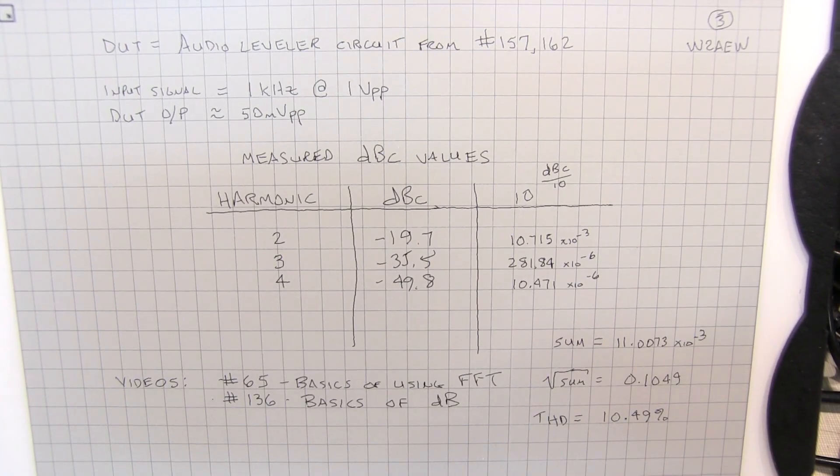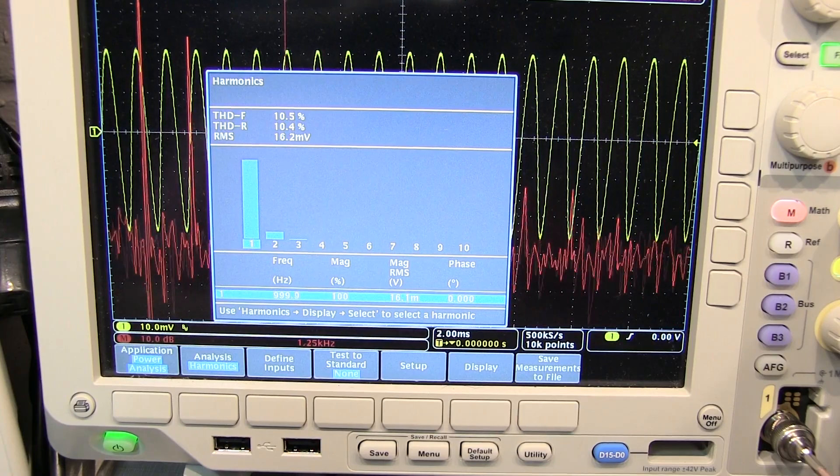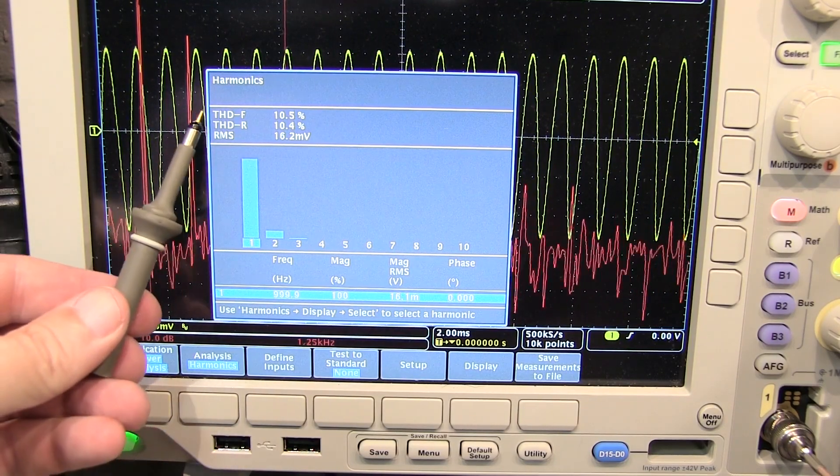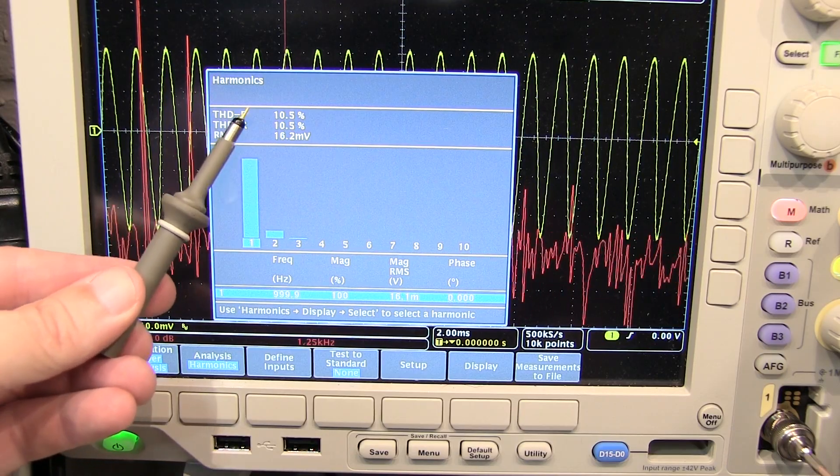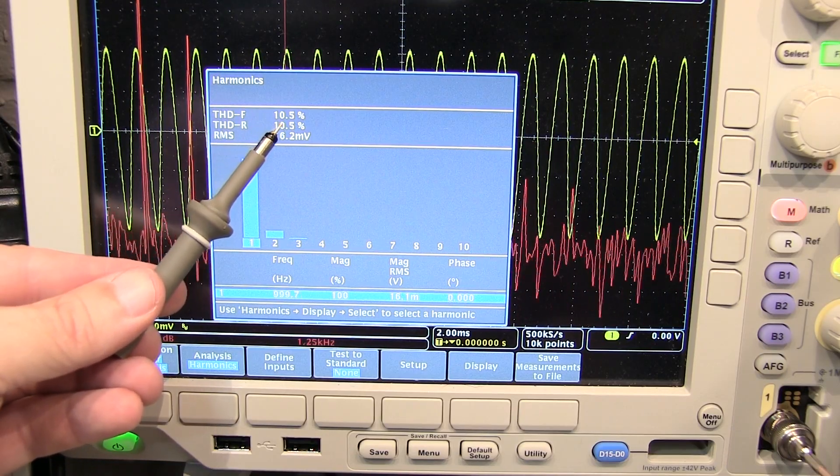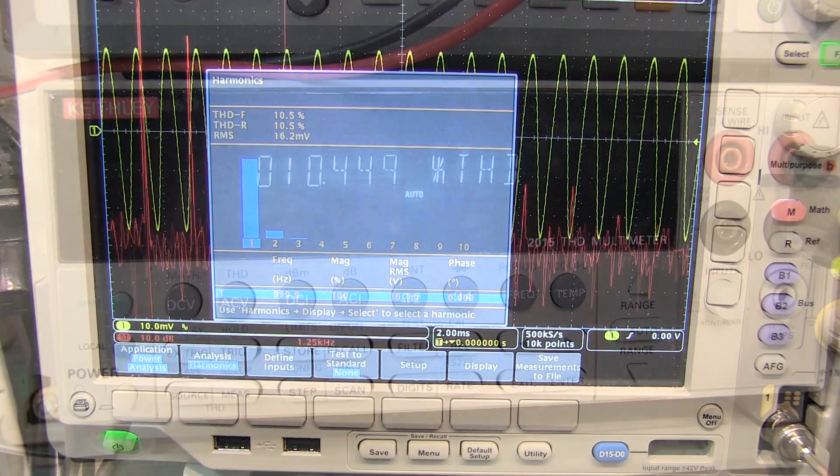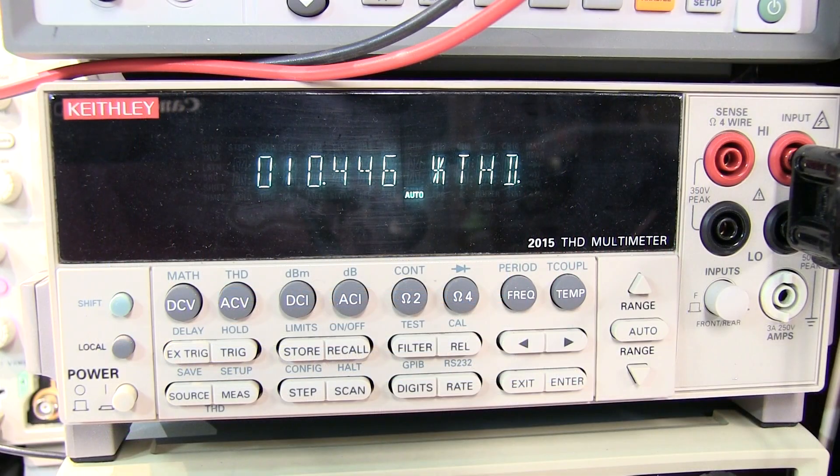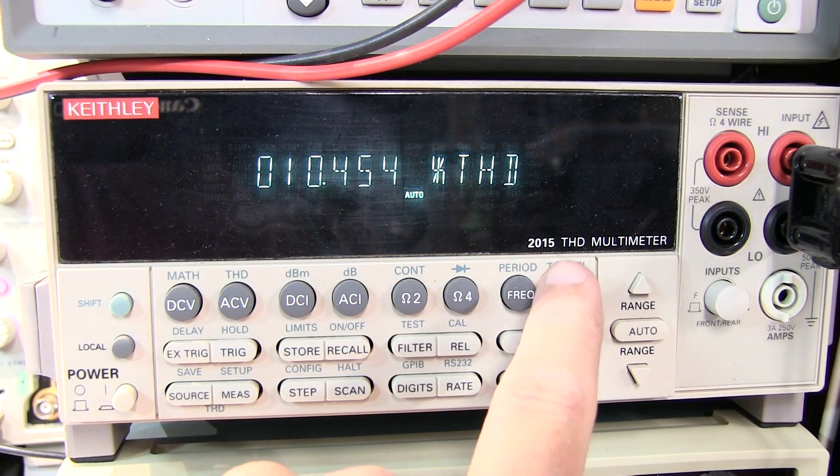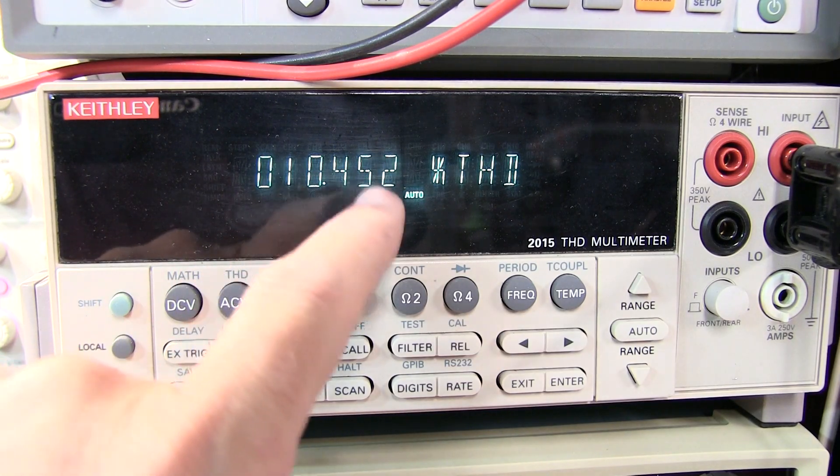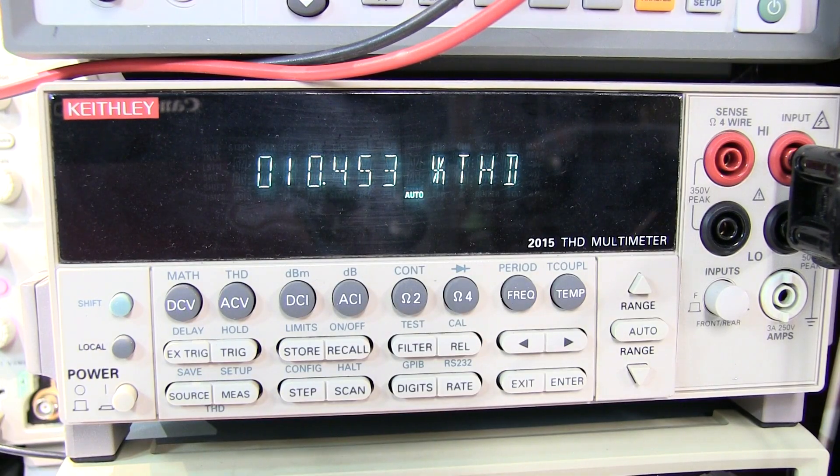So let's go validate that. Now one way to validate that is to use the power application I've got on my scope here, which will compute the total harmonic distortion with respect to fundamental. And we'll see I'm getting about 10.5%. And I measured 10.49%. So that's pretty close. And one last measure of validation is to use my Keithley 2015 THD multimeter. And that's also reporting 10.4%, in some digits here. So 10.45% or so. So these all match to within about a tenth of a percent or so.